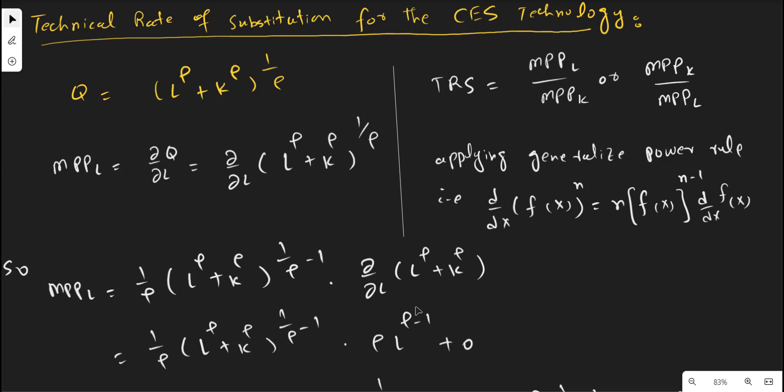The CES technology is given by this production function. To calculate the marginal physical productivity of labor and the marginal physical productivity of capital, we have to take the partial derivative of this production function with respect to labor and with respect to capital.